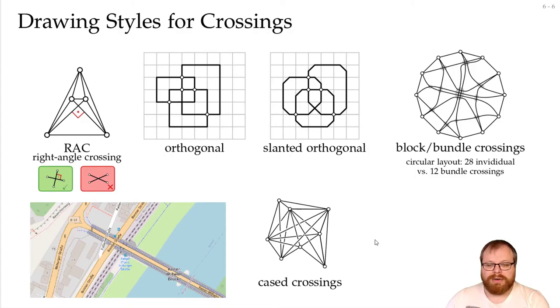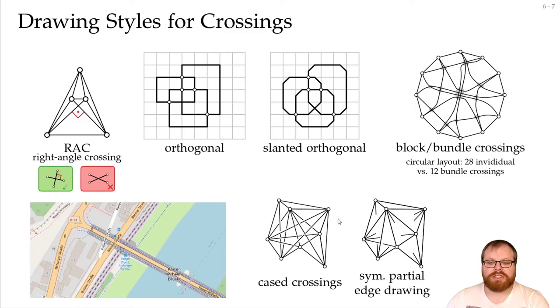And if we disallow them, then we get partial edge drawings. Here we have symmetric partial edge drawings. So for every edge, we remove some part in the middle, but the part that remains on both sides has to be exactly the same length, so that it's easier to find where it goes.